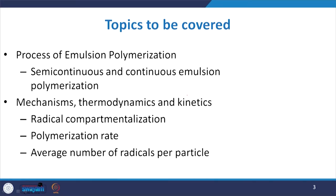In this chapter, we are going to discuss semi-continuous and continuous emulsion polymerization. We will have a discussion about the mechanism, thermodynamics and kinetic approaches of radical compartmentalization, then polymerization rate, and the average number of radicals per particle.